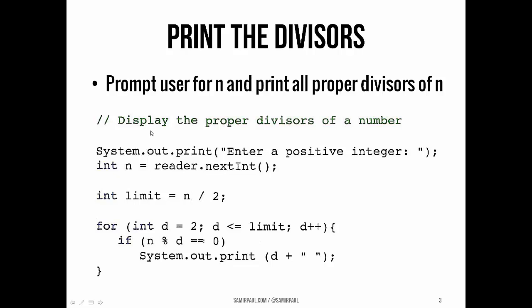We start by asking the user to enter what positive integer we want to work with. Then we set the limit that we'll stop looking at. So if we're looking for all the proper divisors of 12, we would start looking at 2 and check: is 2 a proper divisor of 12? Is 3? Is 4? All the way until we get to n over 2, which in this case would be 6. Once we've reached 6, we know we've checked all the numbers we needed to check.